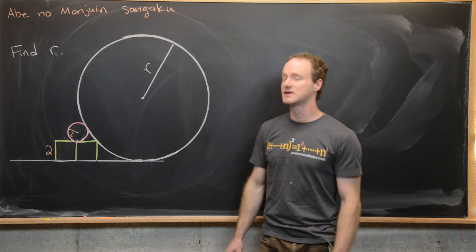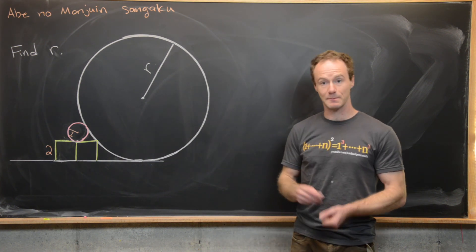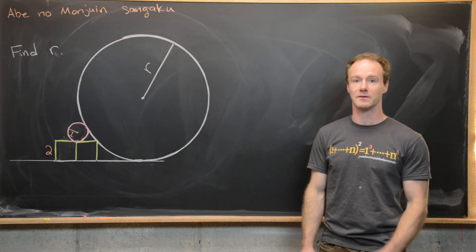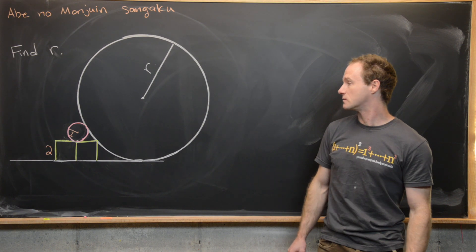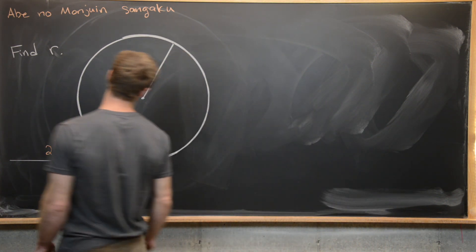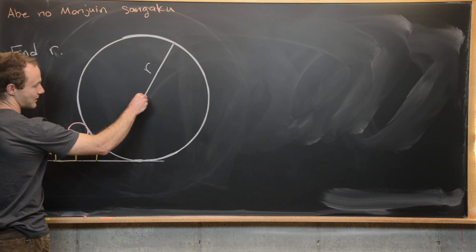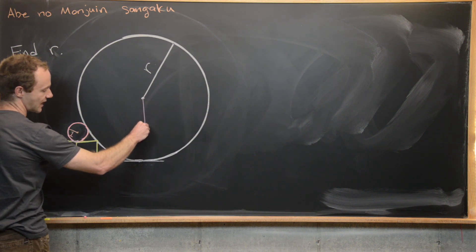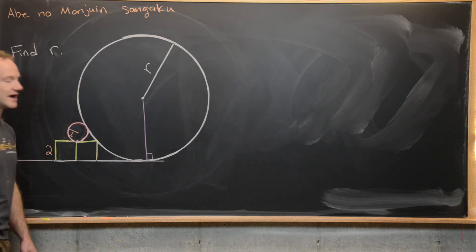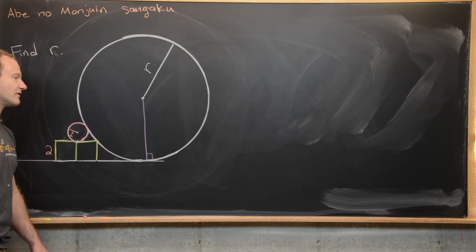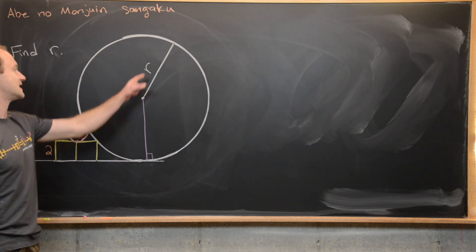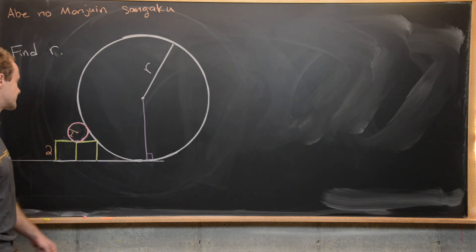We're going to do this by drawing a couple of triangles into this picture and applying the Pythagorean theorem. The first thing I want to do is drop a vertical line straight down so that it meets at a right angle. Notice we know the length of that whole segment — it's R, because it is also a radius of the circle.